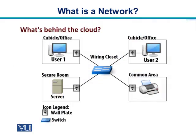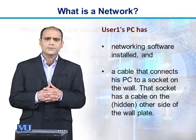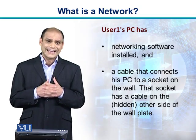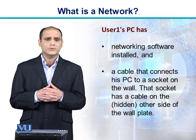What is behind the cloud? If we see the details of the cloud, we can see this kind of diagram. User 1 is sitting in a cubicle in one of his offices. User 2 is also sitting in one of the company offices located in the same building. Then we have a wiring closet, a secure room where the server is located, and a common area where we can place our printers. In this diagram, the wall plate, the switch, a couple of PCs, and a server are all shown.